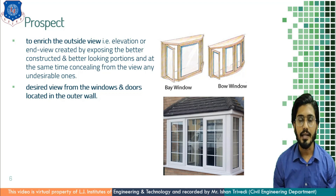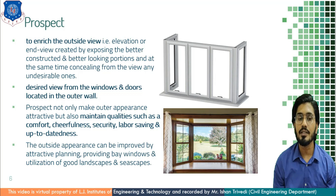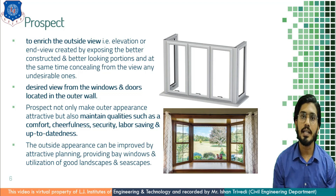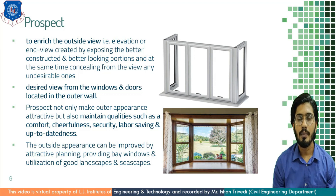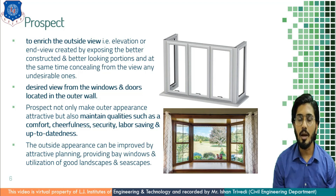Prospect not only makes the outer appearance attractive, but also maintains qualities such as comfort, cheerfulness, security, labor saving, and up-to-dateness. The outside appearance can be achieved by attractive planning, providing bay windows, and utilization of good landscapes and seascapes. If there is an undesirable view nearby — such as dampness or a slum — you simply conceal that view and do not provide any window facing towards it. Based on security purpose or pleasing appearance purpose, prospect serves better building planning.